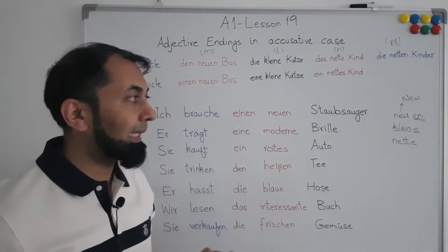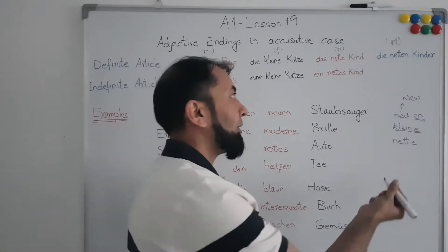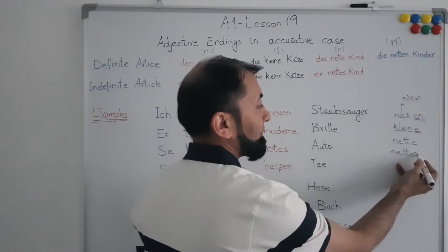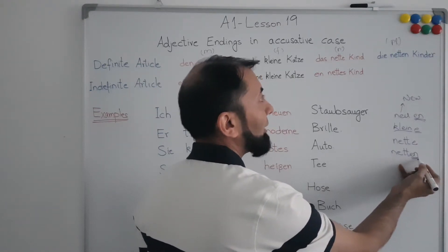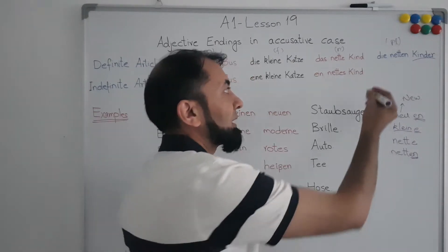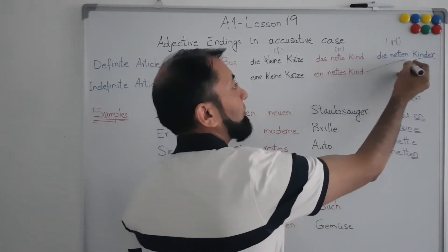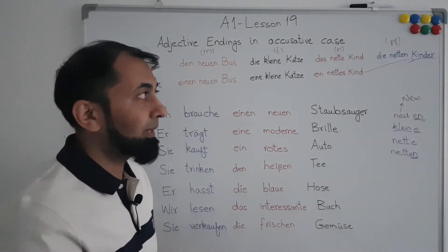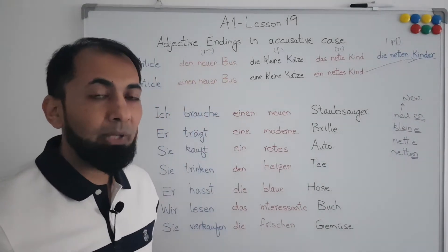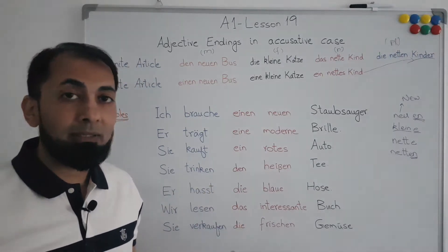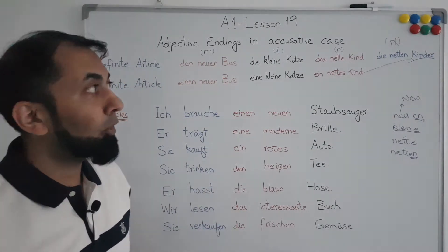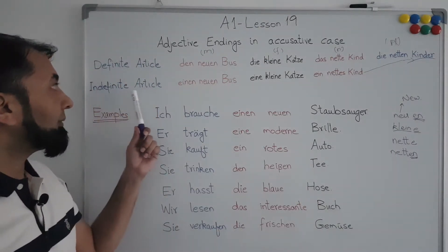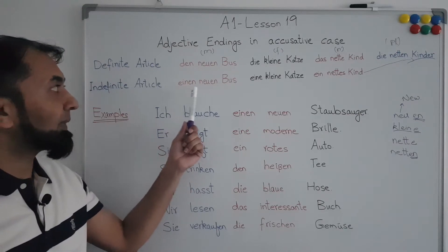Then we have the plural case, in which we add '-en' at the end of the adjective. I have used the same adjective 'nett', but because the noun is plural — 'Kinder', which is the plural of 'Kind' meaning 'kids' — we add '-en' at the end. So for any adjective used with a plural noun in the accusative case, the ending is '-en'.